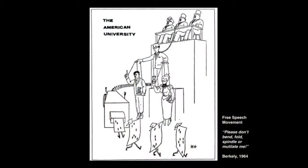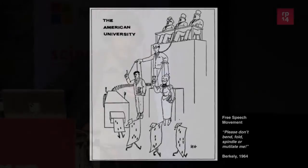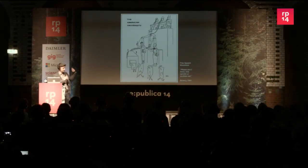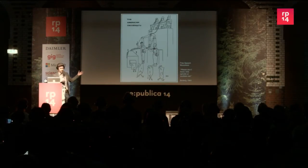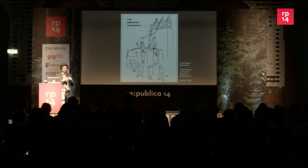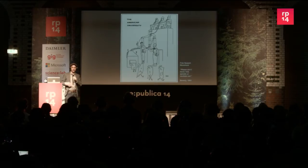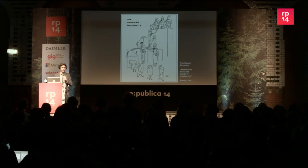I'm also interested in the structure of power in these systems and how they are constructed with computers. This illustration from 1965 is about the introduction of punch cards at a university — a hierarchical structure with capitalists on top, and in the end the university machines outputting students in the form of punch cards. The slogan was: 'Don't spindle, bend, or mutilate me.'